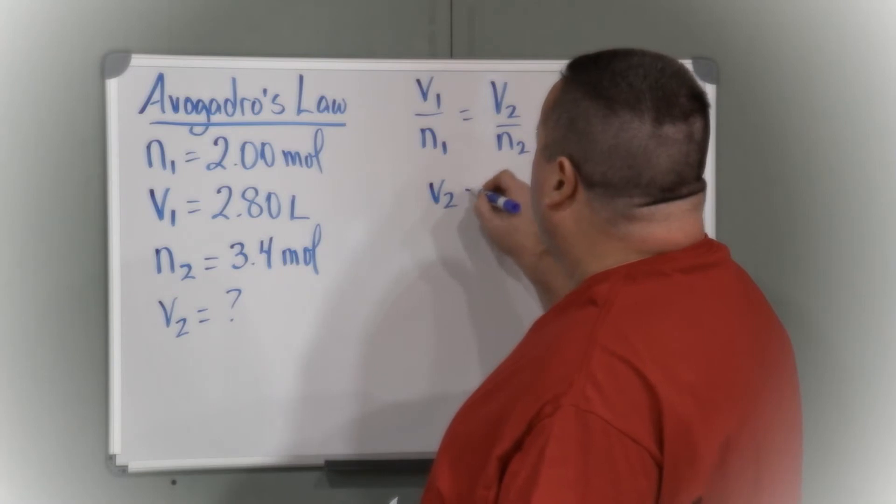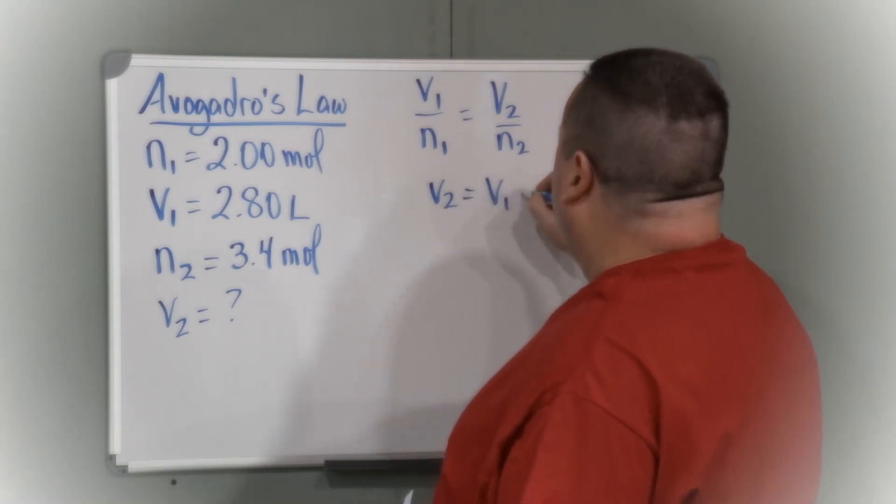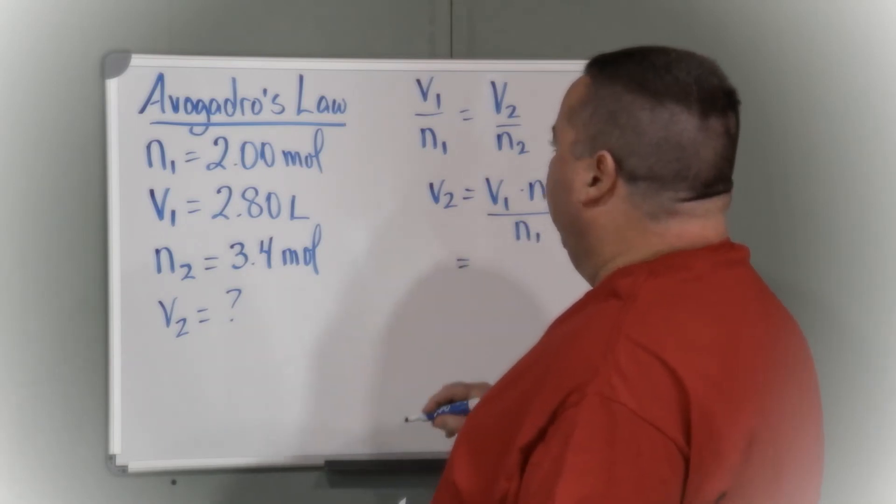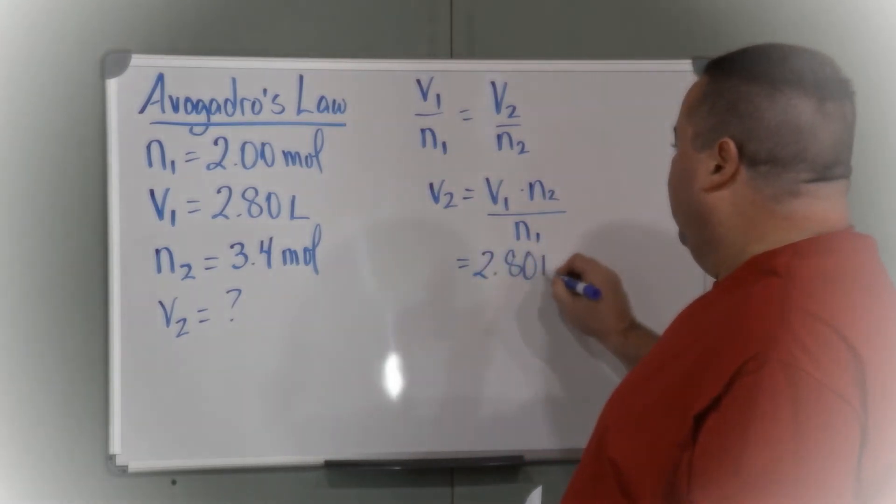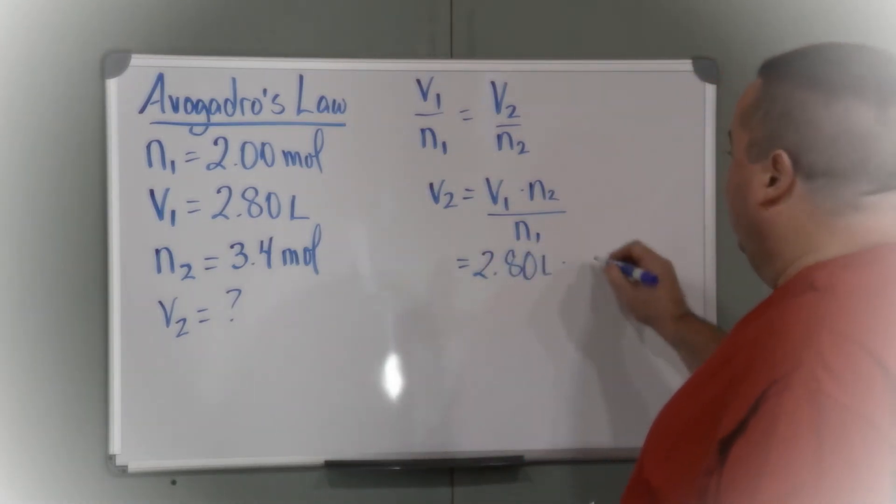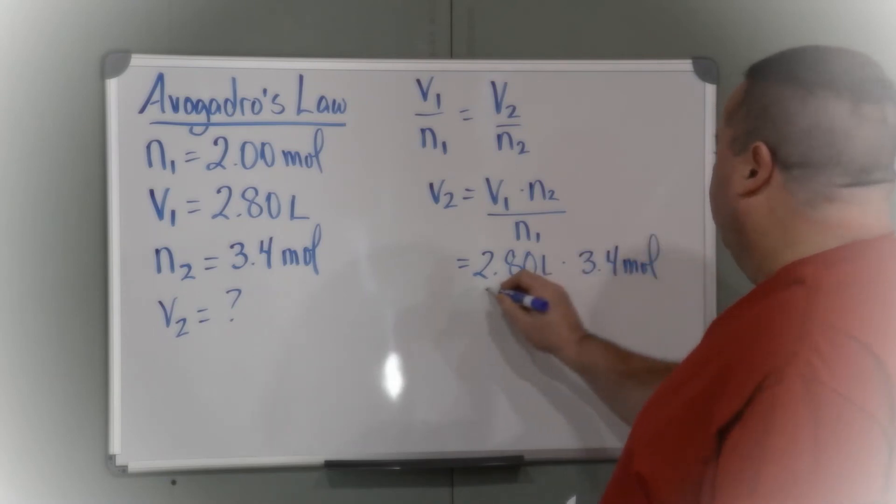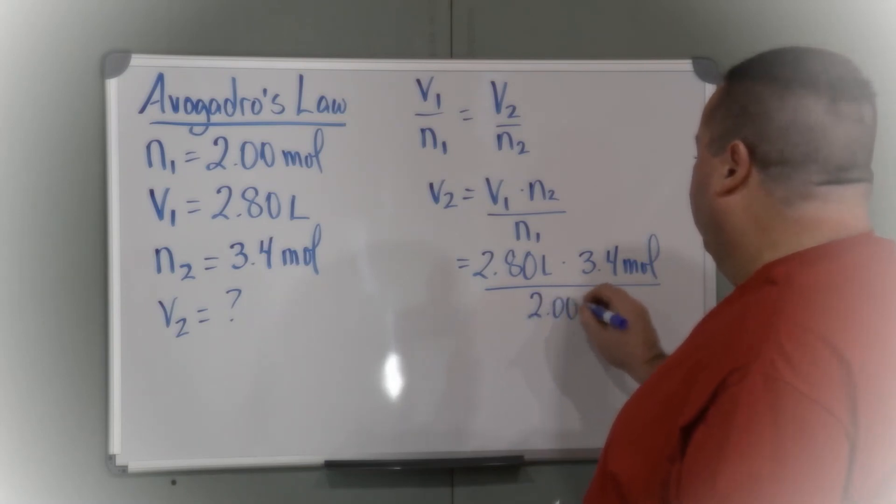V2 is V1 times n2 over n1. V1 is 2.80 liters, n2 is 3.4 moles, and n1 is 2.00 moles.